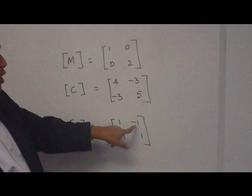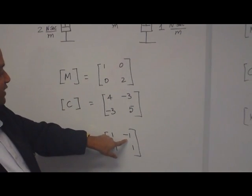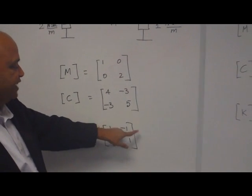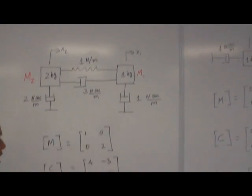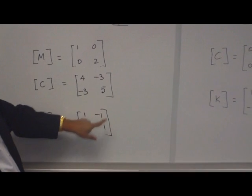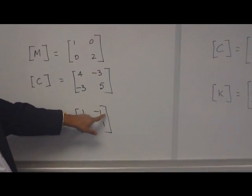Now off-diagonal, K12, how many stiffness connected between mass 1 and mass 2? Again, the same one. There's only one. So with a negative sign, it's minus 1. K21 equal to K12 by symmetry.